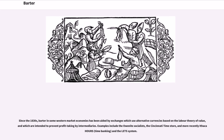Since the 1830s, barter in some Western market economies has been aided by exchanges which use alternative currencies based on the labor theory of value, and which are intended to prevent profit-taking by intermediaries. Examples include the Owenite Socialists, the Cincinnati Time Store, and more recently Ithaca Hours, Time Banking, and the LETS system.